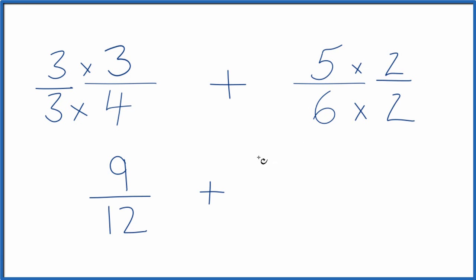On this side, 5 times 2 is 10, and 6 times 2, that's 12. And now we have the same denominators.